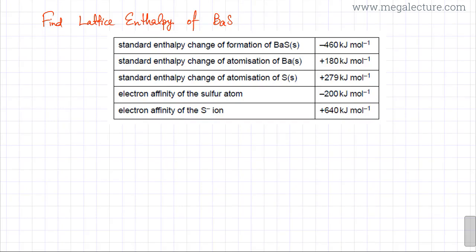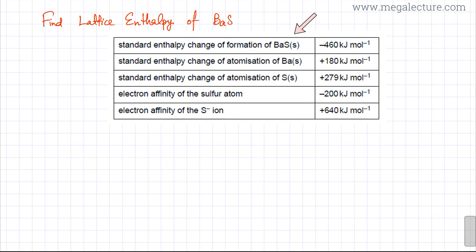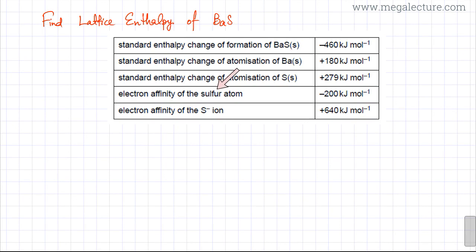In the following lecture, we're going to try and solve for lattice enthalpy of BaS and we're going to try and draw a Born-Haber cycle. You're given the standard enthalpy change of formation of BaS, the standard enthalpy change of atomization of Ba, the enthalpy change of atomization of S, and the electron affinity of the sulfur atom and of the sulfur ion.